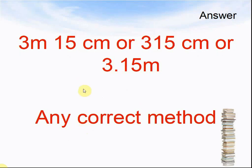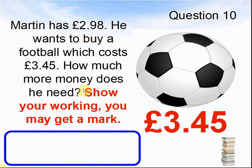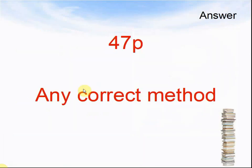Here comes the next question. Question 10: Martin has £2.98 and wants to buy a football which costs £3.45. How much more money does he need? Show your working — you may get a mark. Pause the video until you are ready to see the answer. The answer was 47p, using any correct method.